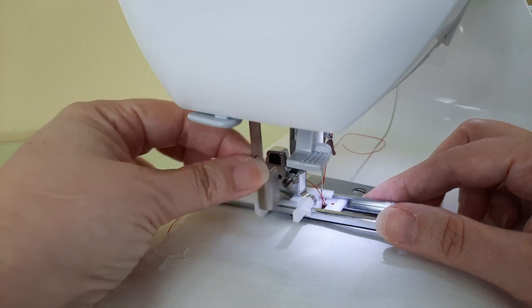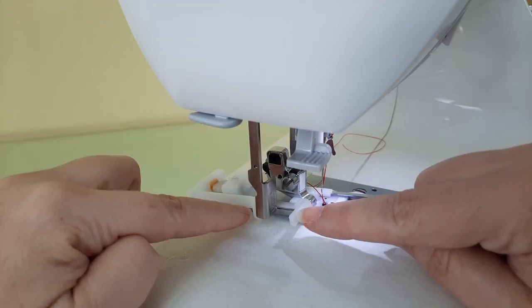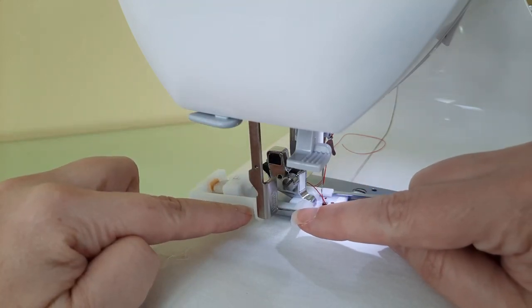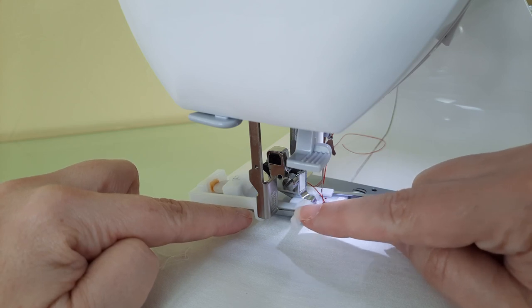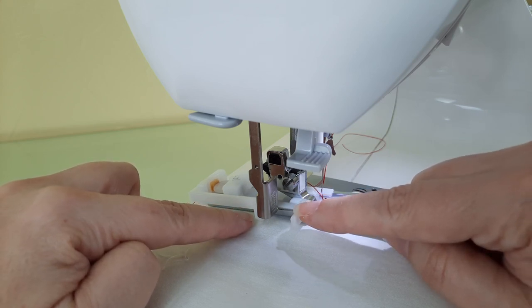So you need to make sure that when you pull the buttonhole lever down that you pull it up in between these two plastic pieces, so that as the buttonhole foot stitches it can engage and know when to start and when to stop. Make sure you pull it all the way down and you won't have any issues.